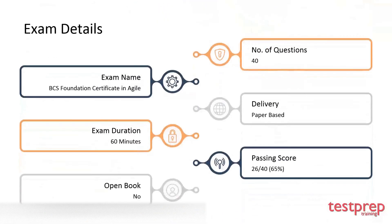Exam details: the exam code is BCS Foundation Certificate in Agile. The number of questions is 40, the time limit is 60 minutes, delivery is paper-based with no open book, and the passing score is 26 out of 40, or 65 percent.